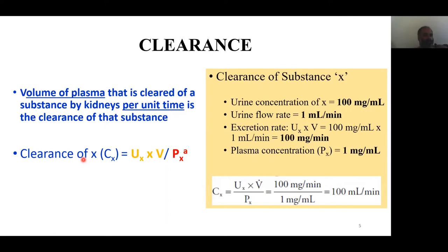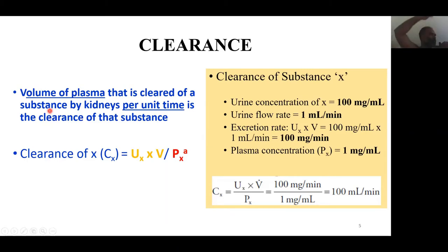What is clearance? Clearance is quite literally a volume of plasma that is cleared of a substance — any substance — by the kidney per unit time. The underlying concept is important: it includes a volume unit (ml or liter) and it is a per-unit-time phenomenon — the amount of plasma being acted upon by the kidney per unit time to extract a substance and make it part of the tubular fluid.